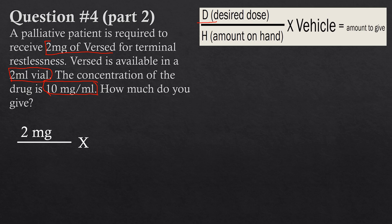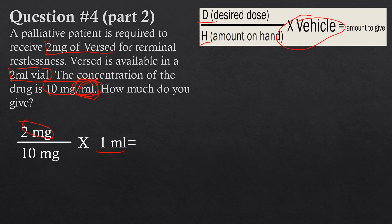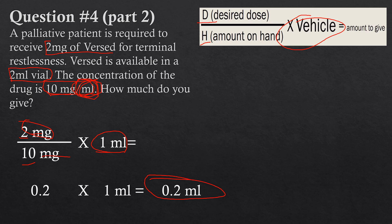H, the amount on hand, is 10 milligrams per mL — so 10 milligrams goes on the bottom. Every 10 milligrams comes in one milliliter, so the vehicle is one milliliter. Solving: 2 divided by 10 — milligrams cancel — gives 0.2. Multiplied by one milliliter gives 0.2 milliliters. That's different from the last question because the concentration is different, which stresses the point that we care about concentration, not how much is in the vial.